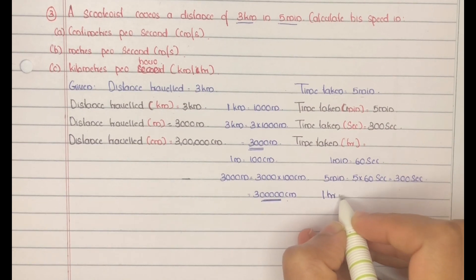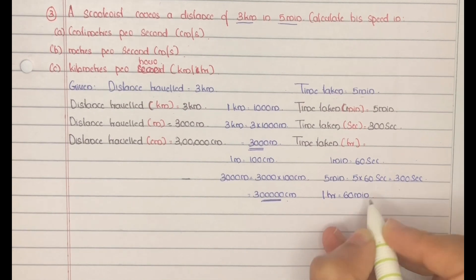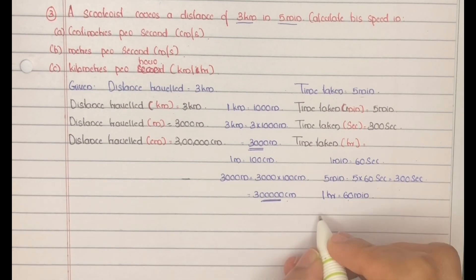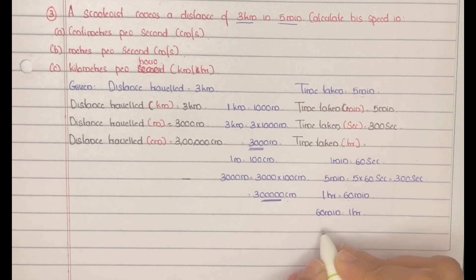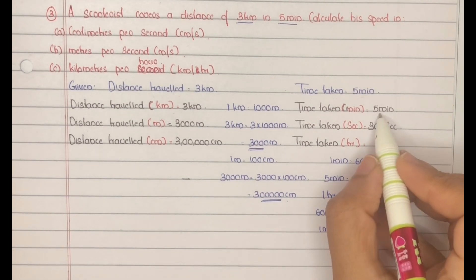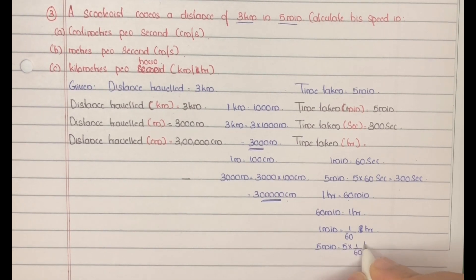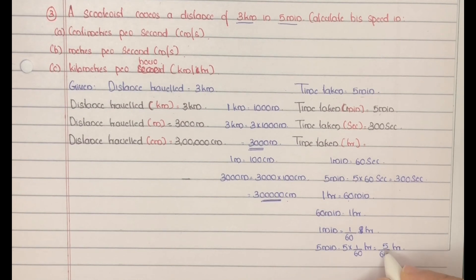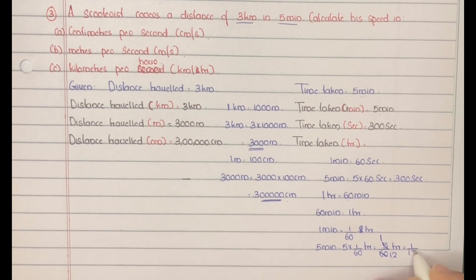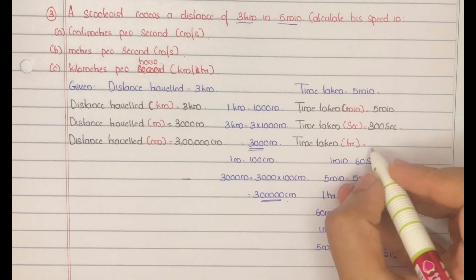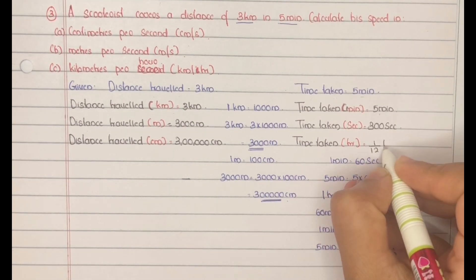We know that 1 hour is equal to 60 minutes, which means 1 minute is equal to 1 by 60 hour. So 5 minutes is equal to 5 into 1 by 60 hour, which is 5 by 60 hour. Simplifying, 5 is common and 12 into 5 is 60, so this equals 1 by 12 hour. Therefore, time taken in hours is 1 by 12 hour.